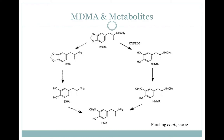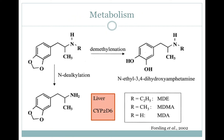The main metabolic pathways of MDMA have been elucidated and over a dozen metabolites have been identified, some shown here: MDA, DHA, DHMA, HMMA, and HMA. MDMA is primarily metabolized in the liver by demethylation, then further conversion of the resulting catechol metabolites by methylation, glucuronidation, and sulfation before being excreted. The methylation of catechol metabolites DHMA and DHA is specifically facilitated by catechol-O-methyltransferase, giving HMMA and HMA. Additionally, N-dealkylation occurs to degrade the side chains.